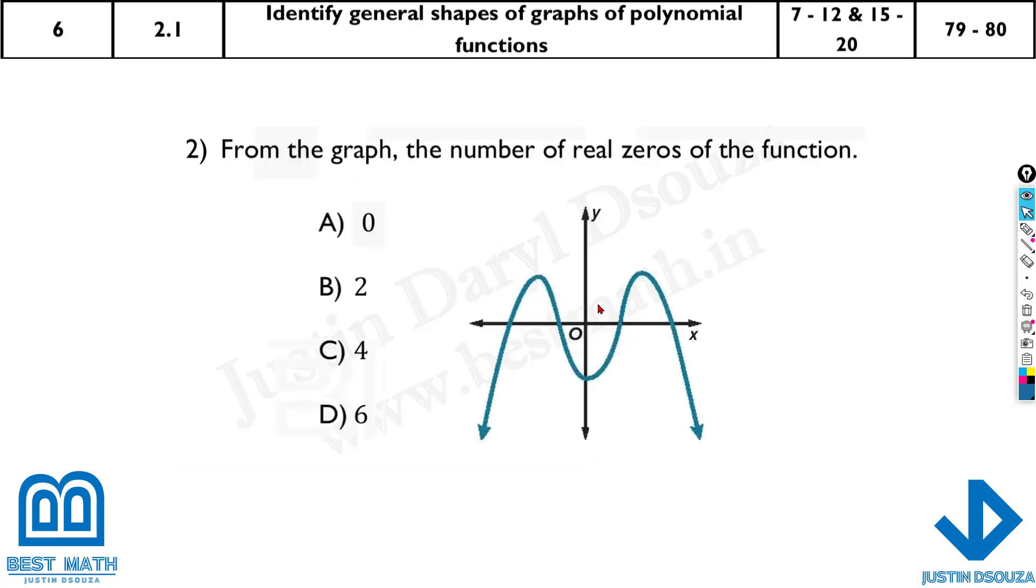Now how many solutions or real zeros are there? That is if a graph touches the x-axis. You can see over here it's touching the x-axis at this point one, two, three, four times. So there are four real zeros.